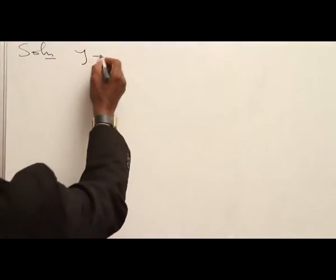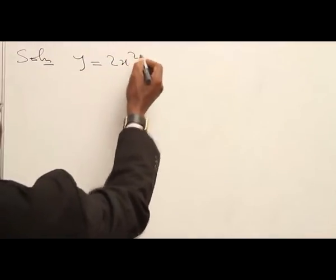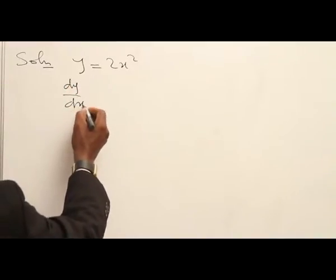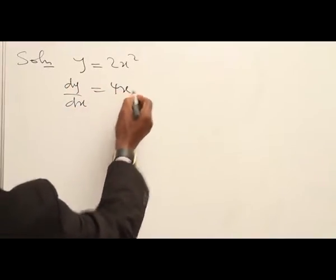We have Y equal to 2S squared. We find dY over dS, and that is equal to 4S.